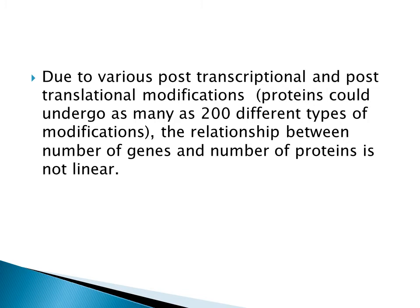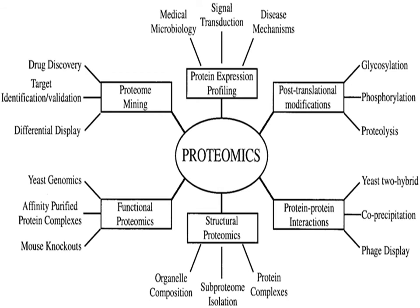That is why the number of genes and the number of proteins is not linear. Now, the types of proteomics: broadly, proteomics is categorized into three main types — functional proteomics, structural proteomics, and expressional proteomics. In more detail, proteomics is also classified as proteome mining, protein expression, post-translational modifications, functional proteomics, structural proteomics, and protein-protein interactions.